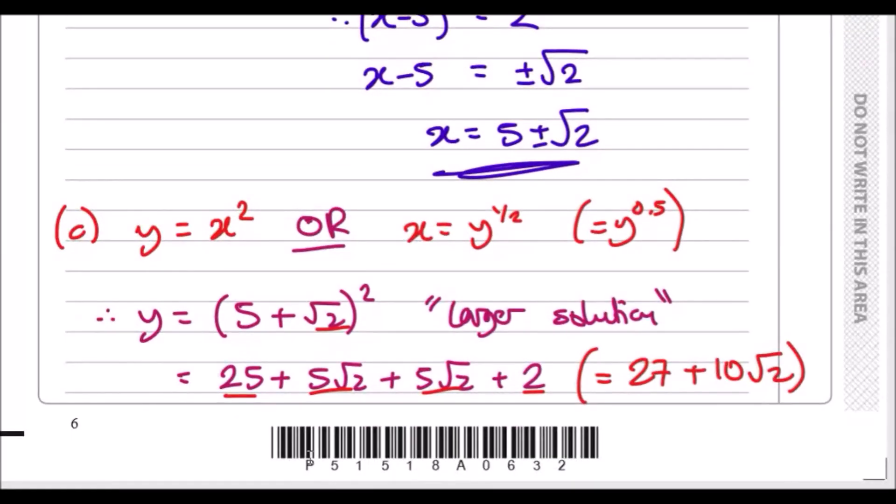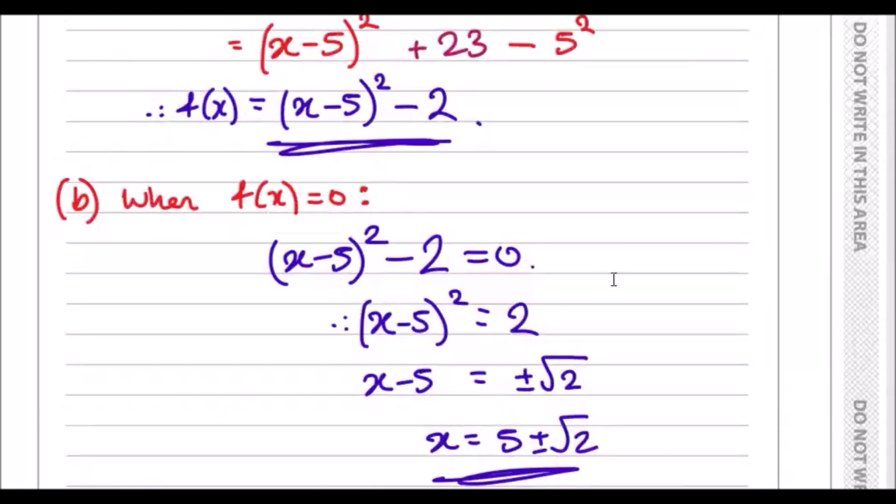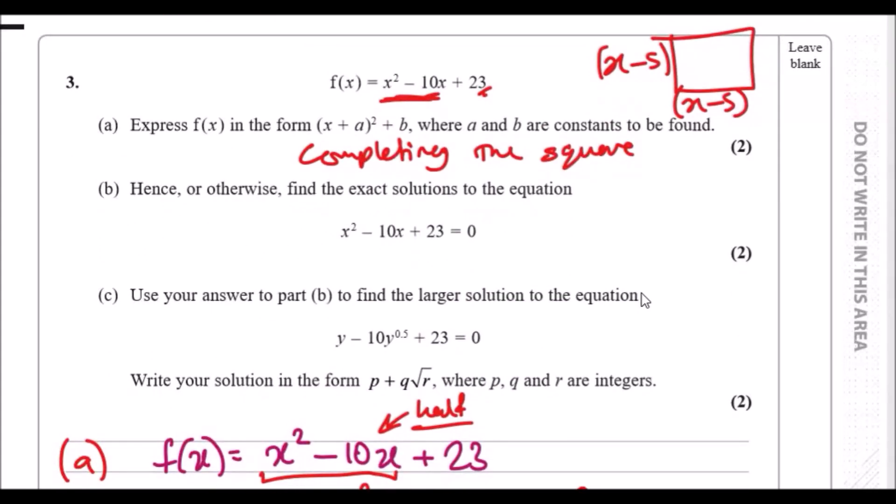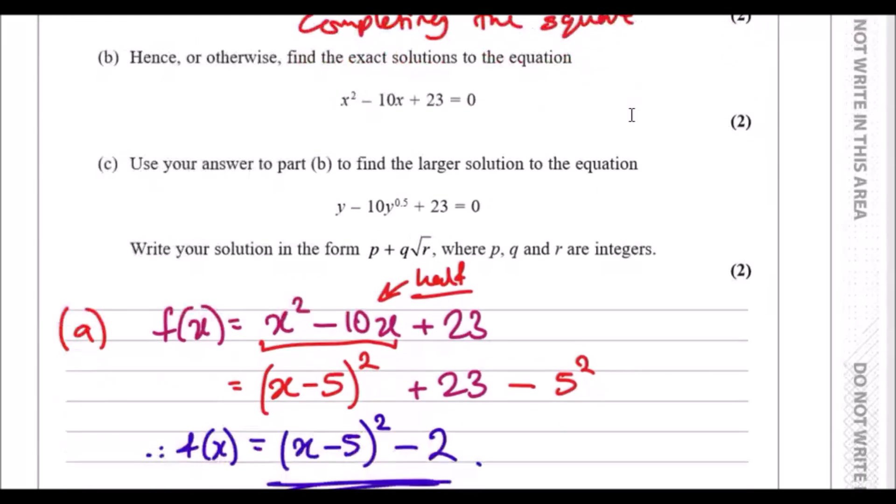And then collect everything and you should get 25 and 2 is 27, 5 root 2s add them up you get 10 root 2s. And that's it, question and problem solved. So question 3 isn't really difficult once you get through this complete square bit. It's all rather straightforward I guess.